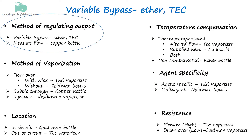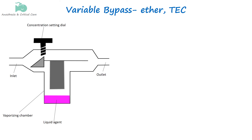We will start our discussion with the methods used in vaporizers to regulate their output. It includes variable bypass and measured flow. The variable bypass system consists of an inlet, an outlet, and the vaporizing chamber.